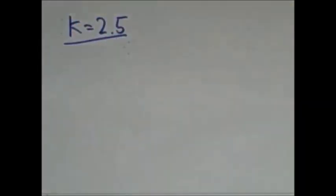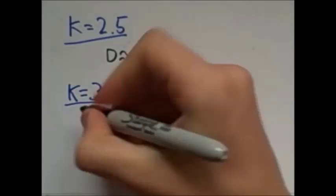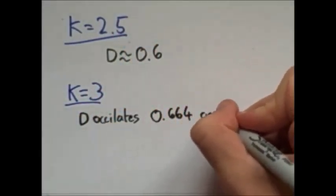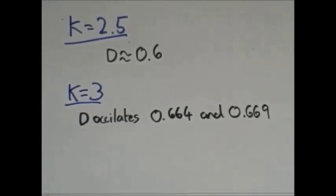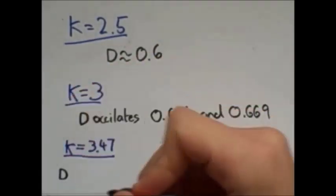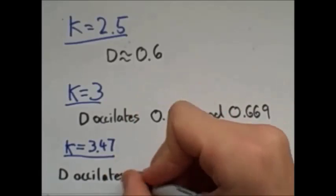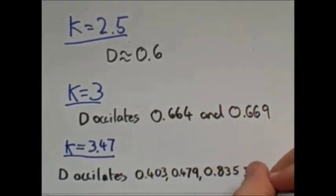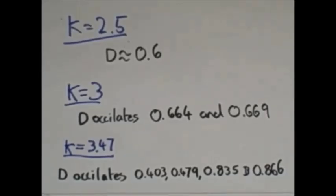If k is equal to 2.5, then it tends towards 0.6. If k is 3, then it oscillates between 0.664 and 0.669. Oscillates? Basically it jumps between the two numbers and never settles on 1. If we make k equal to 3.47, then it oscillates between 0.403, 0.479, 0.835 and 0.866. 4 numbers?